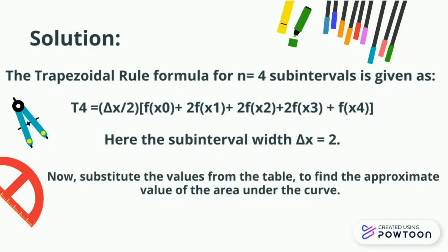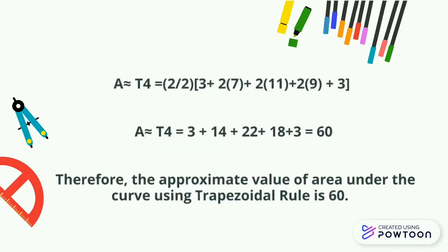Now substitute the values from the table to find the approximate value of the area under the curve. A equals T4 equals (2/2)[3 plus 2(7) plus 2(11) plus 2(9) plus 3]. A equals T4 equals 3 plus 14 plus 22 plus 18 plus 3 equals 60.